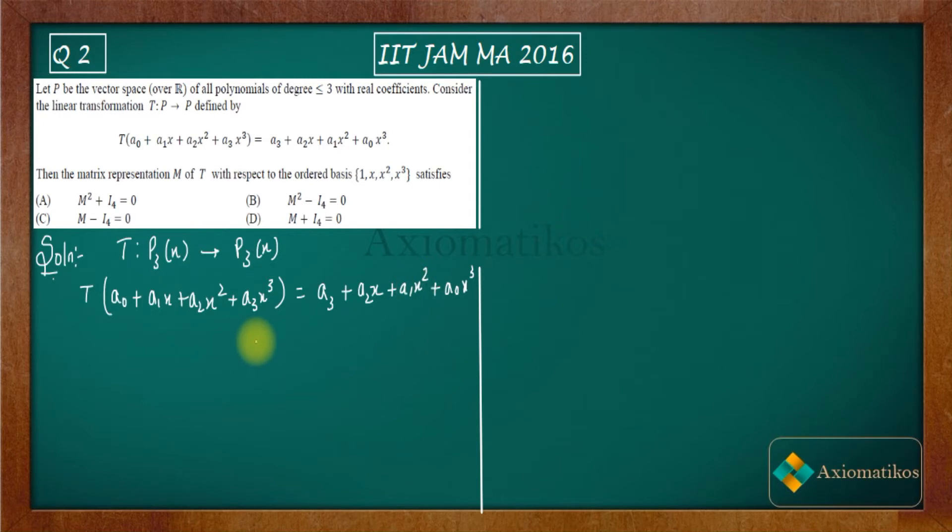Now what you have to do is find out the matrix. I will tell you the procedure for finding a matrix with respect to a given transformation. You have basis {1, x, x², x³} on the left hand side. Similarly, you have basis {1, x, x², x³} on the right hand side.